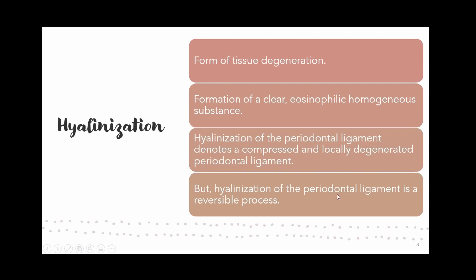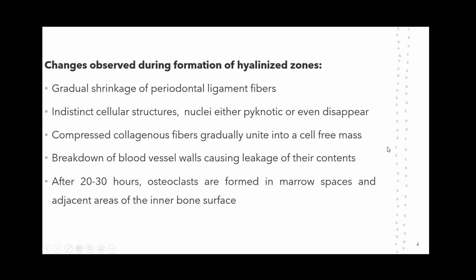In the case of the periodontal ligament, it is a reversible process and is indicative of the ligament being compressed and locally degenerated. Changes observed during the formation of the hyalinized zones include the gradual shrinkage of the periodontal ligament fibers, indistinct cellular structures, and nuclei that are either pyknotic or have disappeared — one of the first signs of hyalinization.